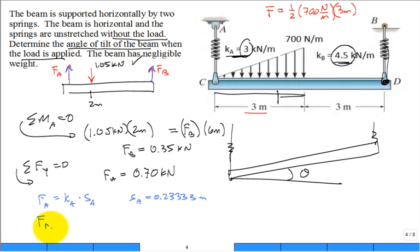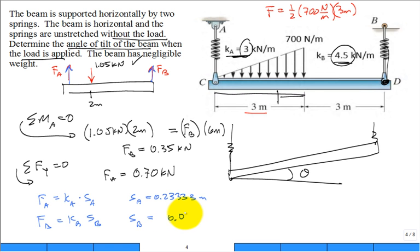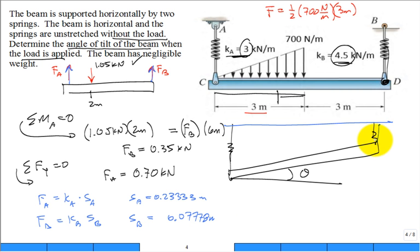Similarly, using the force in B with the stiffness of B, the stretch of B comes out equal to 0.07778 meters. So if you think about it, this is the stretch of B and this is the stretch of A — the beam has gone down further on the A side than on the B side.